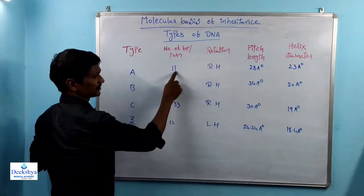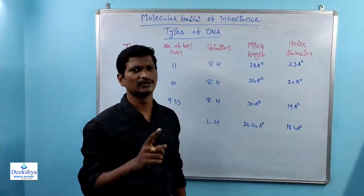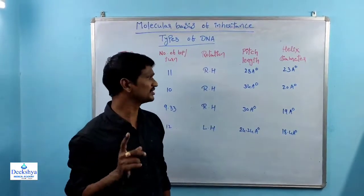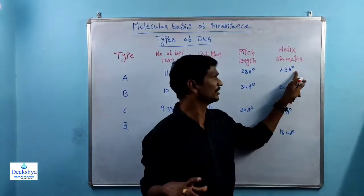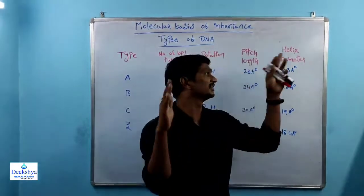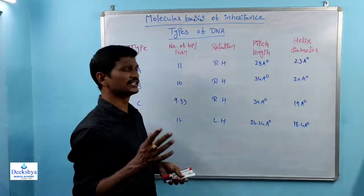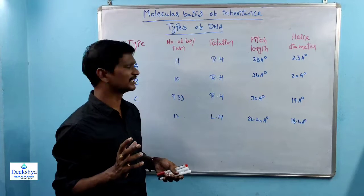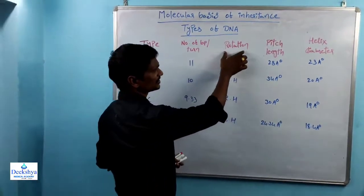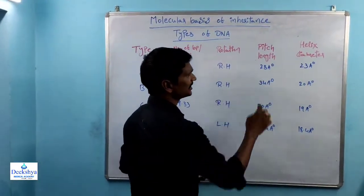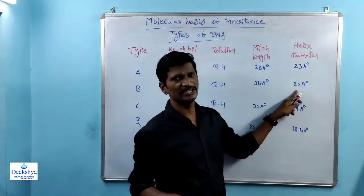A-DNA: 11 base pairs per turn, right-handed helix (clockwise), pitch length 28 Å, helix diameter 23 Å. B-DNA: the most common DNA existing in prokaryotic and eukaryotic cells. B-DNA has 10 base pairs per turn, right-handed helix, pitch length 34 Å, helix diameter 20 Å.